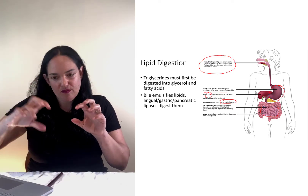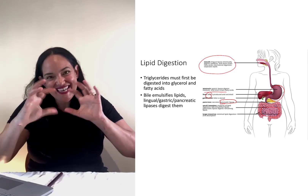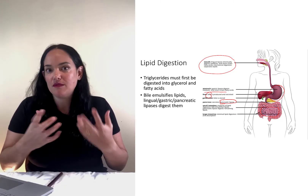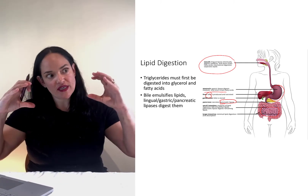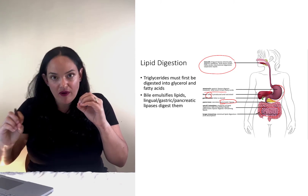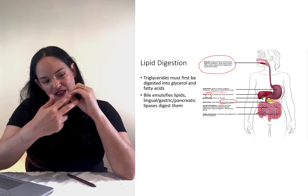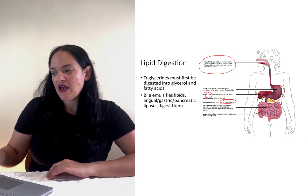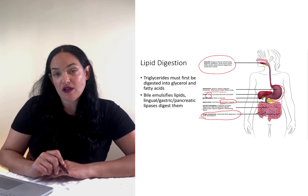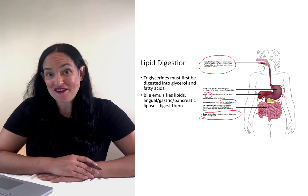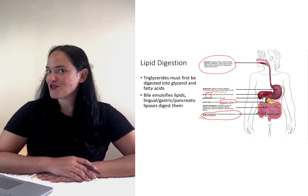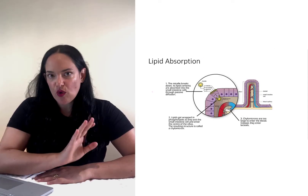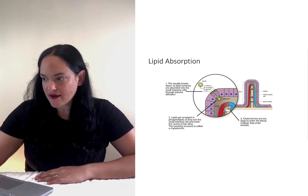Bile salts form these little circular encasements around lipids, which allows them to float in the watery environment of the small intestine — it emulsifies them, allowing them to dissolve in water. When we've broken down a large lipid into smaller globules because of bile, it forms a structure called a micelle. Pancreatic lipase can then act on the lipids within that micelle to break them down. Most lipids are absorbed in the small intestine; whatever is left over passes to the large intestine, which can cause oily, uncomfortable stools.